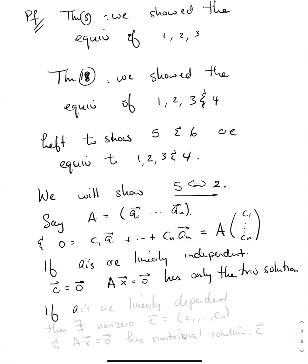If, on the other hand, the A i's are linearly dependent, then there will exist a non-zero vector C given by the C1's through the Cn's, and this will give a non-trivial solution to the equation Ax is equal to zero. That non-trivial solution is C. If 5 is true, 2 is true. If 5 is not true, 2 is not true. We've established that 5 is equivalent to 2.